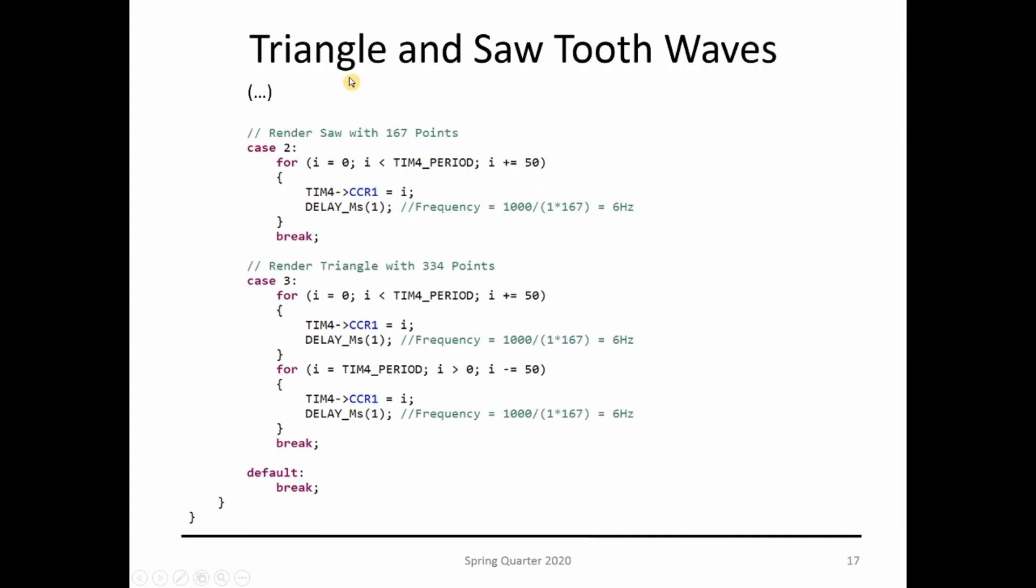If I look at the code, it's going to be case 2 and case 3 of your wave generator function. This one is doing the sawtooth. It just goes from zero to the max and then it cuts when it repeats again, just goes back to zero. This one just goes from zero to max and then from max to zero to do the triangle part.